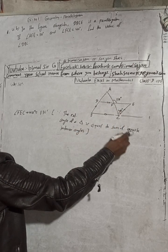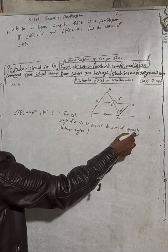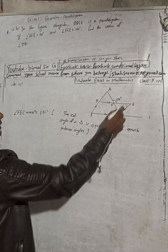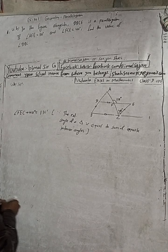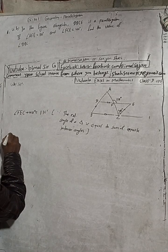This is the exterior angle of this triangle. This will be equal to sum of opposite interior angles, so this angle and this angle is opposite to this.